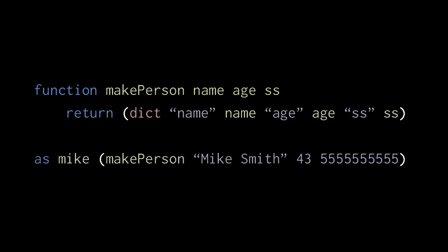We could then call this makePerson function like so, with the string MikeSmith for the name, 43 for the age, and 555-555-5555 for the social security number.